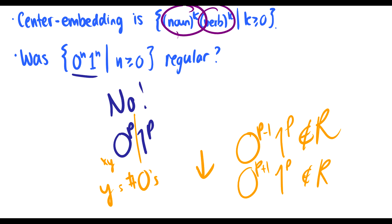Noun to the K, verb to the K follows the same pattern. If we take the intersection and map our nouns and verbs onto 0 to the N, 1 to the N, then clearly center embedding is not regular. We cannot show center embedding with finite state machines. We can produce this and understand this, but the machines won't allow it.